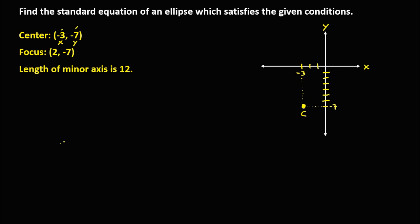Then from the focus, x is positive 2 and y is negative 7. So we plot positive 2 on x and negative 7 on y. This is now the coordinate for the focus.